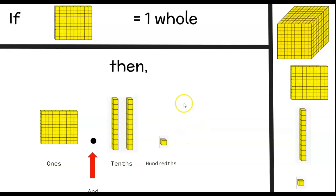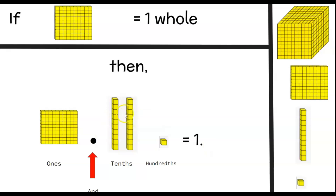Let's look at this problem. If the one hundredths flat is equal to one whole and we're given this representation, how would we write this decimal number? We have one hundredths flat in the ones place — that would be one whole. We count two ten sticks in the tenths place, so two goes in the tenths place. And we have one ones cube, so one goes in the hundredths place. You would read this decimal as one and twenty-one hundredths.